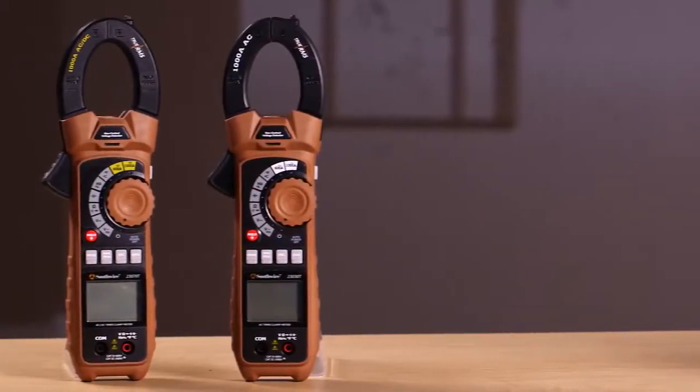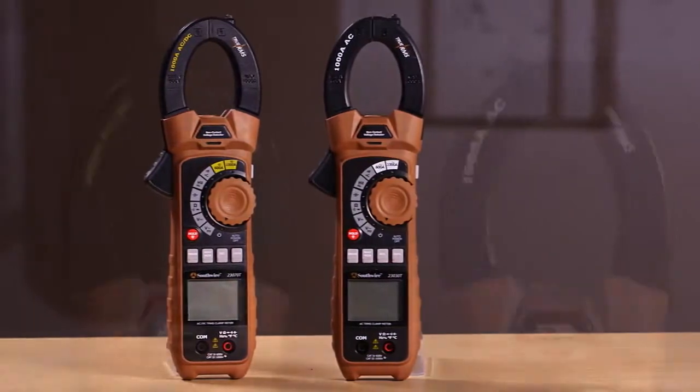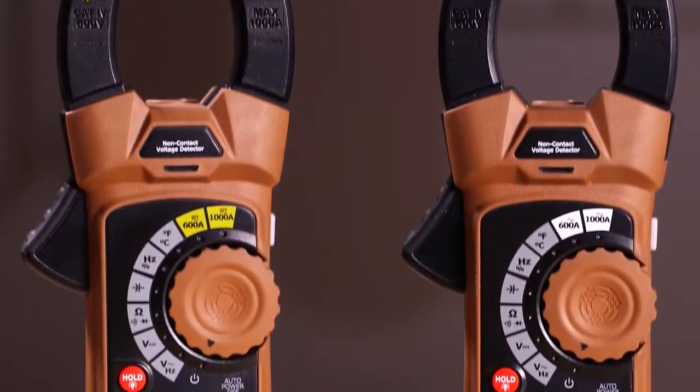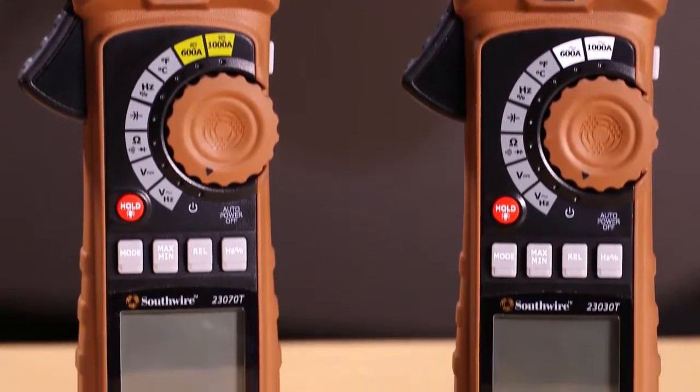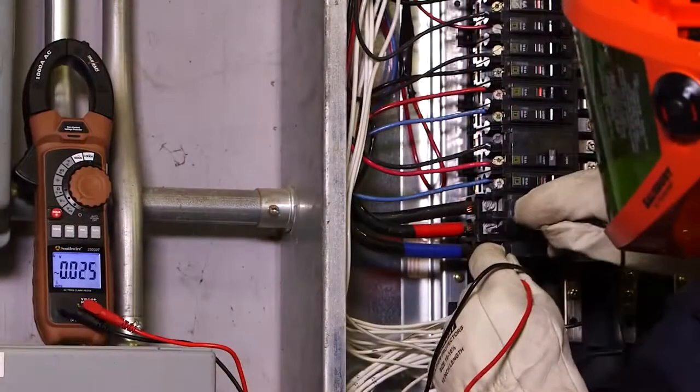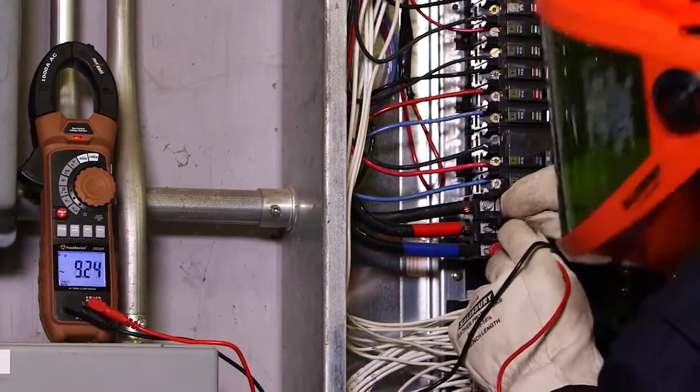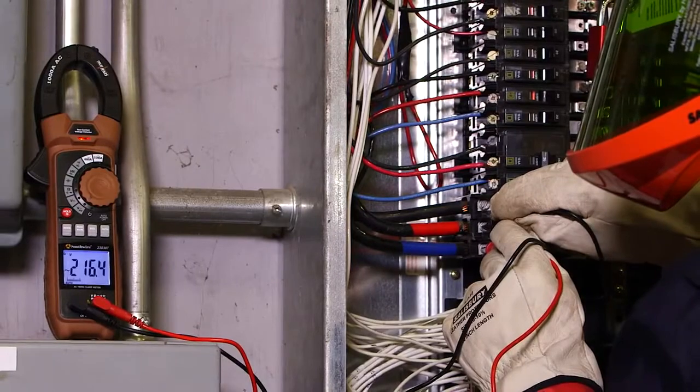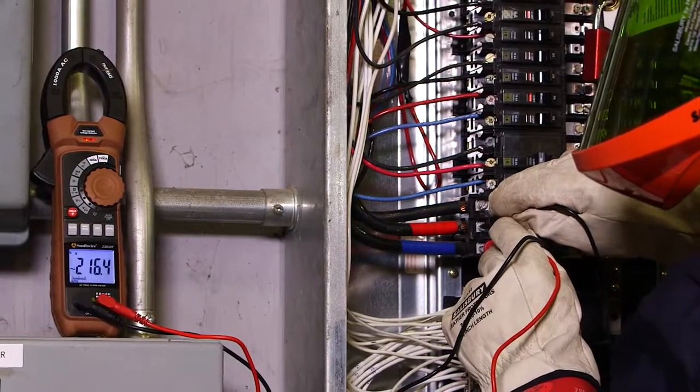The 23030T and 23070T meet the needs of the professional user in demanding applications. The CAT4 safety rating allows use in high-power circuits such as main distribution panels and service entrances.